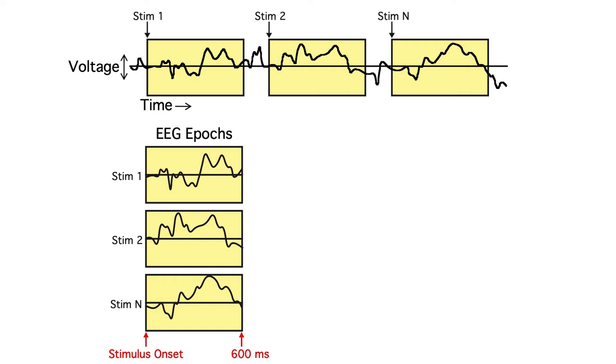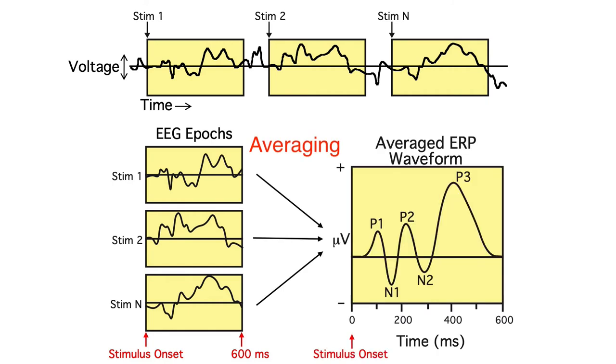To pull out the brain's consistent response to some type of event, we can simply average across the epochs for that event type. When we average across enough epochs, any activity that's consistent from trial to trial remains in the average, and any random noise simply averages out.